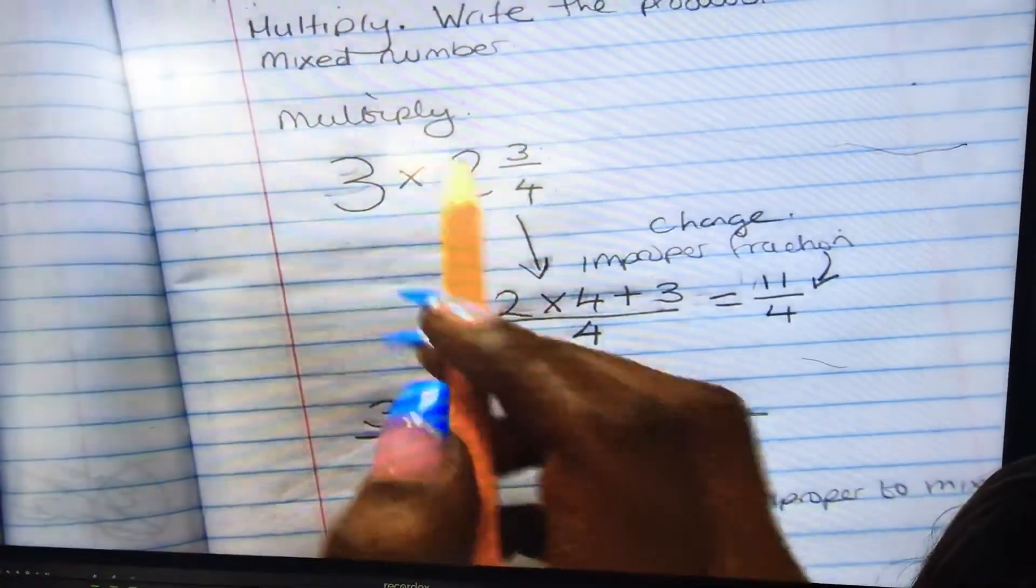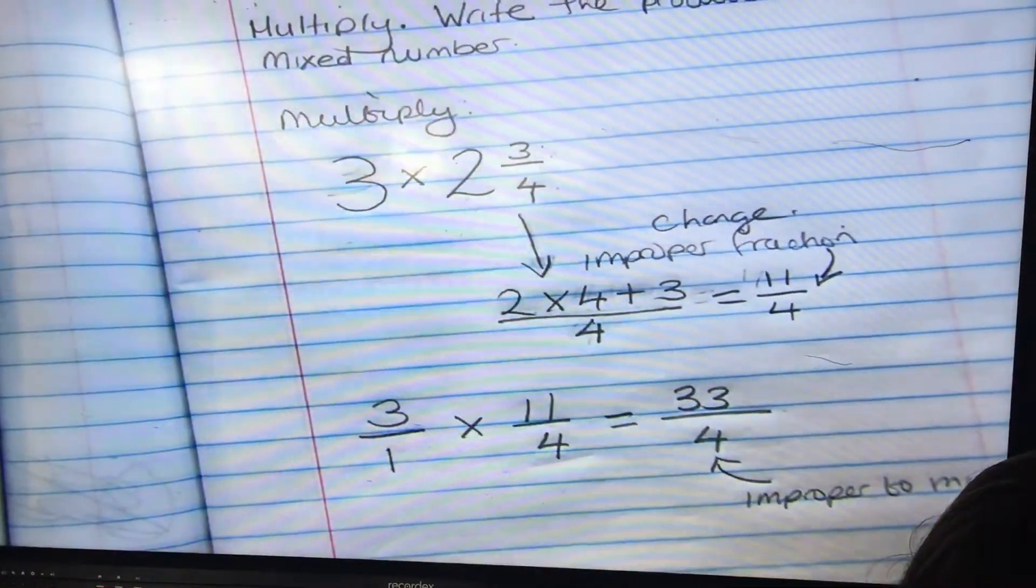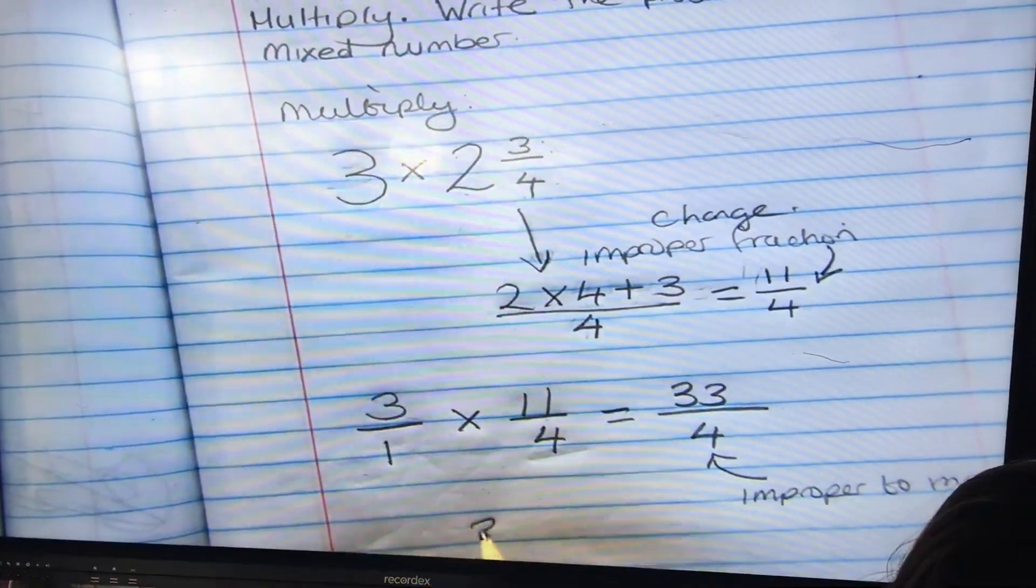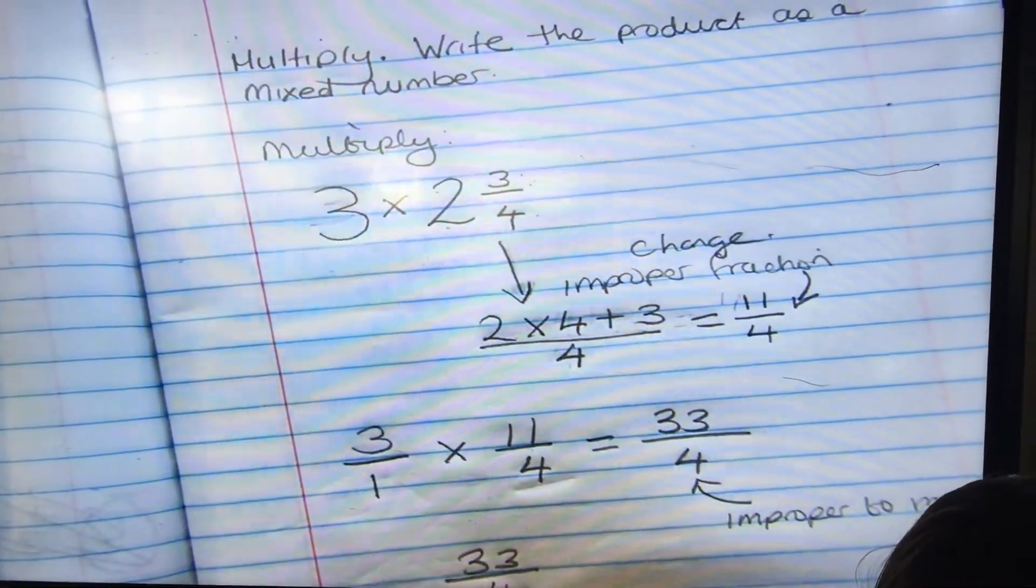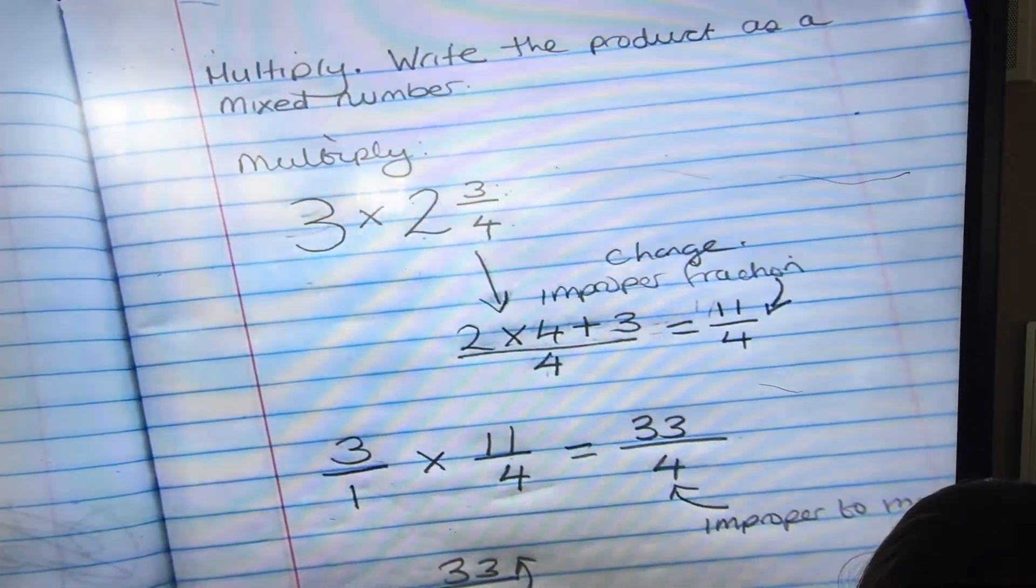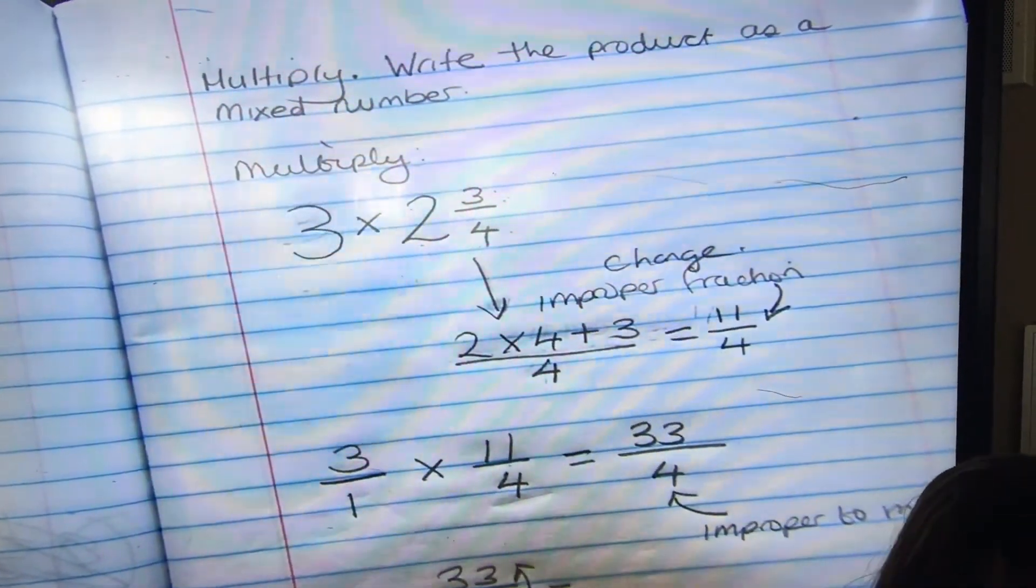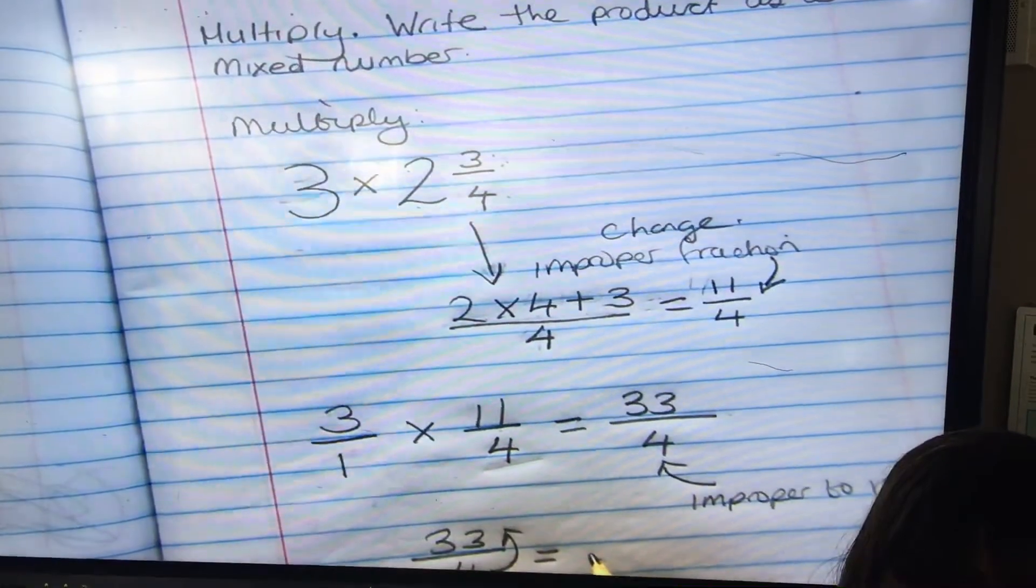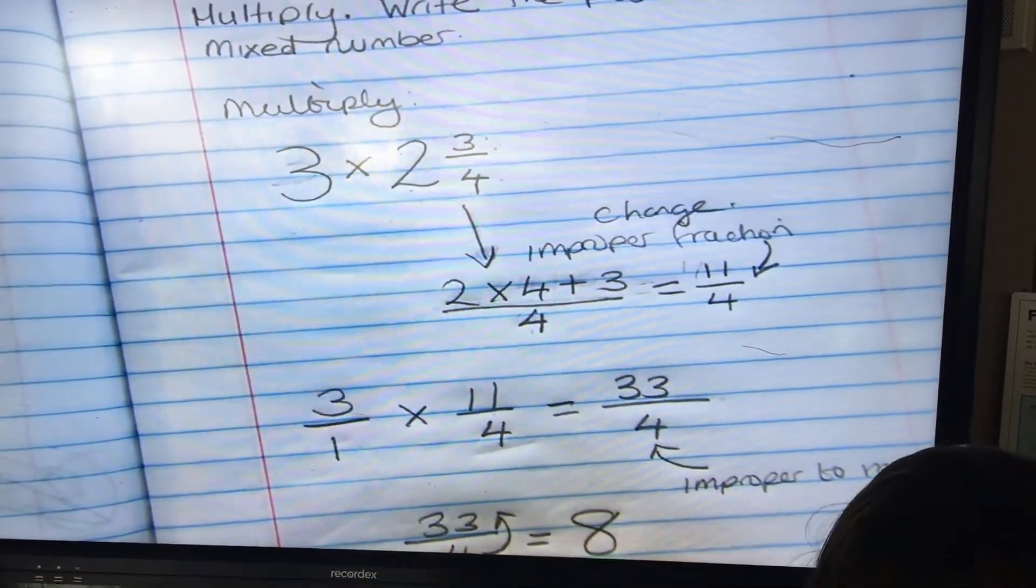So we've got 33 over 4. How many times does 4 go into 33? Eight. You know your multiplication, eight whole times, right? Yes. And what's left over?